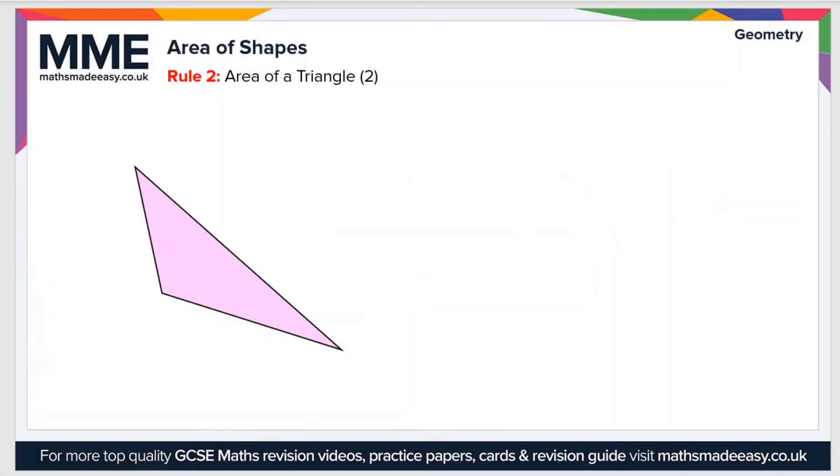Moving on to the second rule, which is slightly trickier: if we have a triangle with side lengths of a, b, and c—notice how I've used lowercase letters for the sides here—then angles on the inside are capital A, where capital A is opposite side a, capital B opposite side b, and capital C opposite side c.